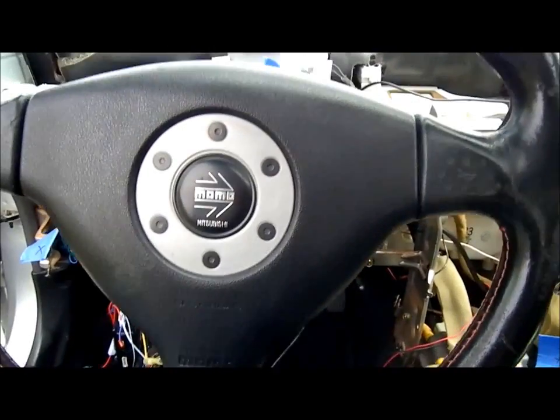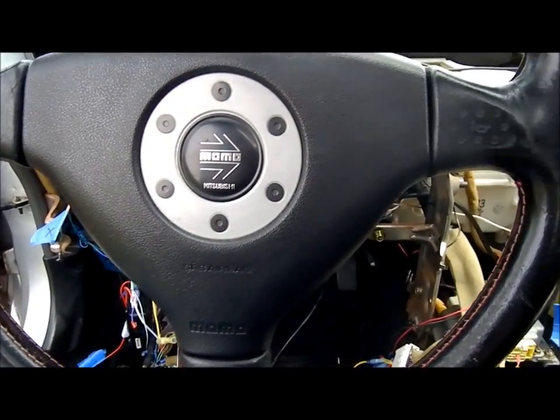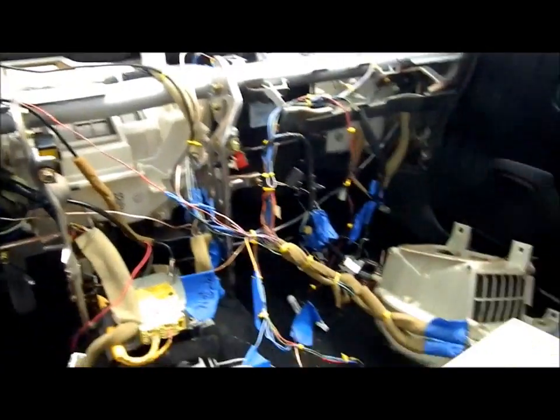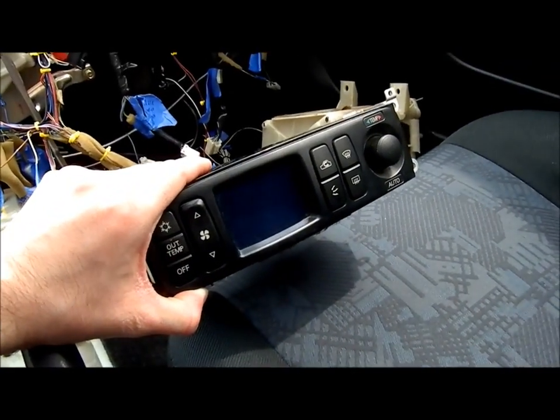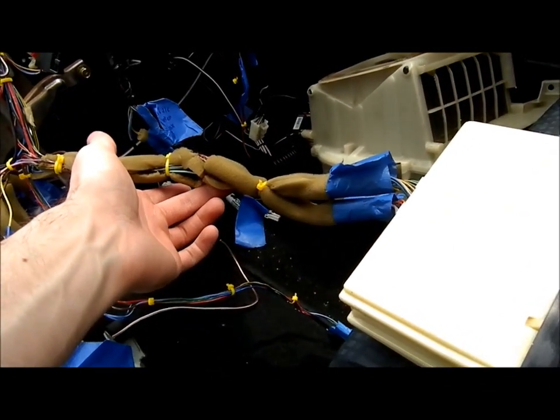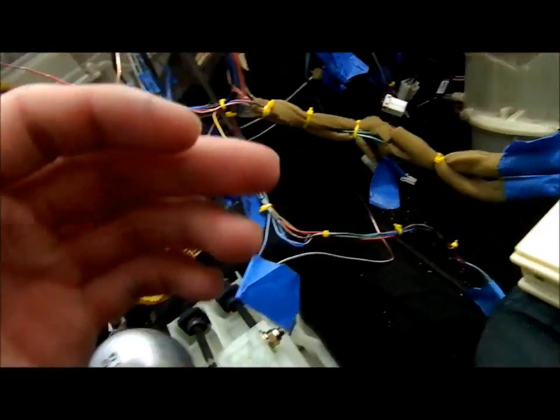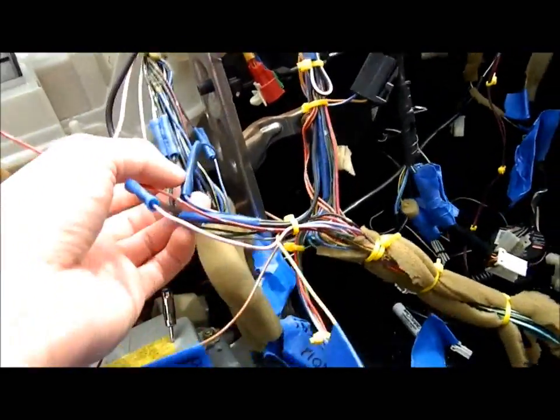All right, so you guys wanted a write-up on how to install the automatic climate control into a fifth gen Mirage. This is the EVO 4 climate controller box and this is the harness that I separated from the EVO 4 dash harness. For the most part, all of the wires from that harness can be spliced straight into the factory heater control harness.